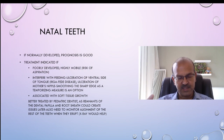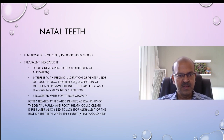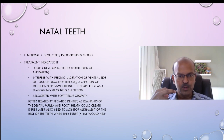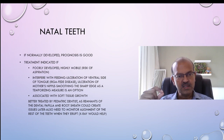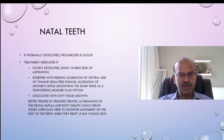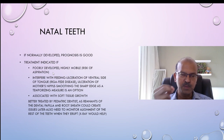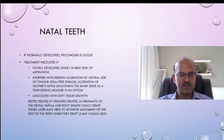Smoothing the sharp edge as a temporizing measure is an option where the sharpness is a problem but the tooth is stable, and sometimes this can be associated with soft tissue growth like a nipple over the gums. It's better treated by a pediatric dentist, as remnants of the dental papillae and the root sheath could create issues later. Remember that if there are remnants, it could interfere with the next erupting teeth as well. We also need to monitor alignment of the rest of the teeth when they erupt.